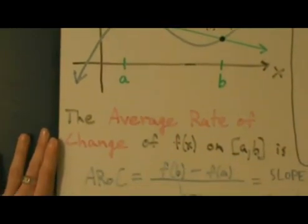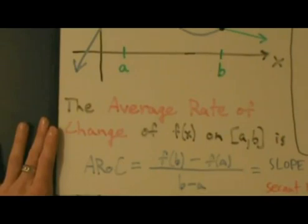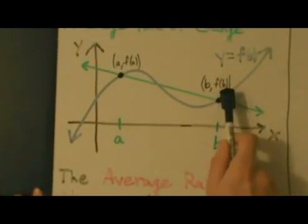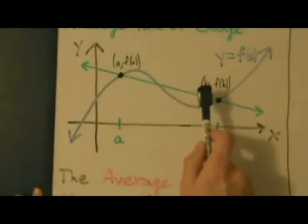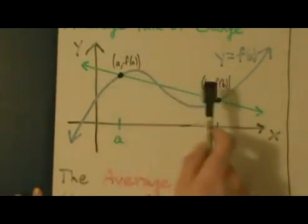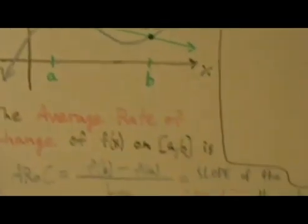is defined to be AROC for average rate of change, equals f of b minus f of a divided by b minus a. So notice what this is, f of b minus f of a divided by b minus a. That's the change in y divided by the change in x. So that's the slope of this green line. And this green line is called the secant line.